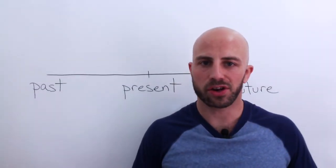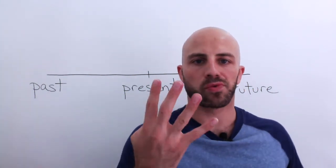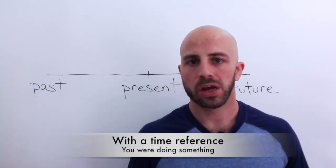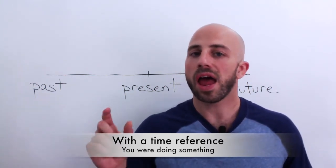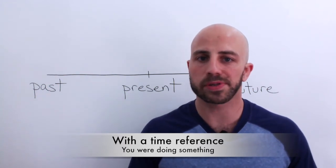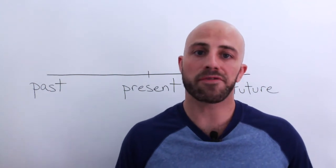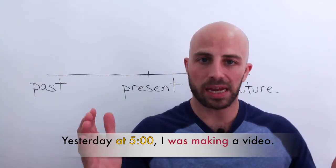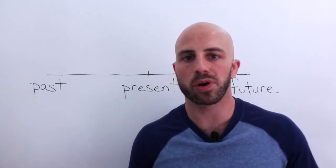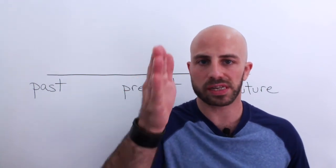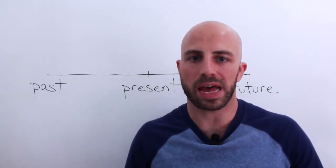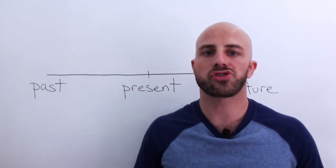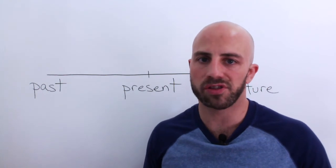Let's move on to rule number four. We often use the past continuous tense with specific time references — something you were doing at a specific time. For example: 'Yesterday at five o'clock, I was making a video.' If you were doing something before a time and after a time, and the time reference is in the middle, you use the past continuous. Look at your timeline and draw a picture for rule number four.